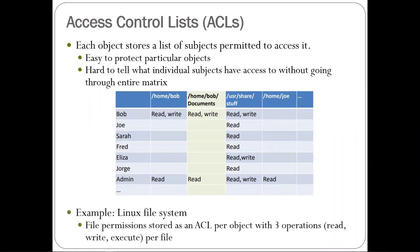This is basically what the Linux file system is doing — permissions are associated with that file, and you can see what those permissions are by just looking at the file. Linux only uses three operations per cell: read, write, and execute, with some rare others.